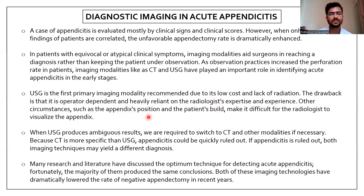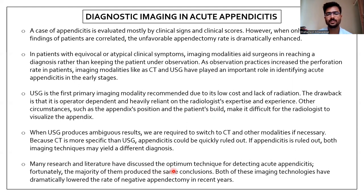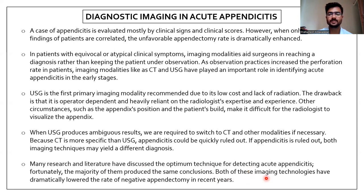Sometimes the appendix position is such that it is difficult to visualize. In these cases, we need to switch to CT. CT is more specific than USG and appendicitis can be quickly ruled out. Many research studies have discussed the optimum technique for detecting acute appendicitis, and the majority have produced the same conclusions. Both these imaging technologies have dramatically lowered the rate of negative appendectomy in recent years.